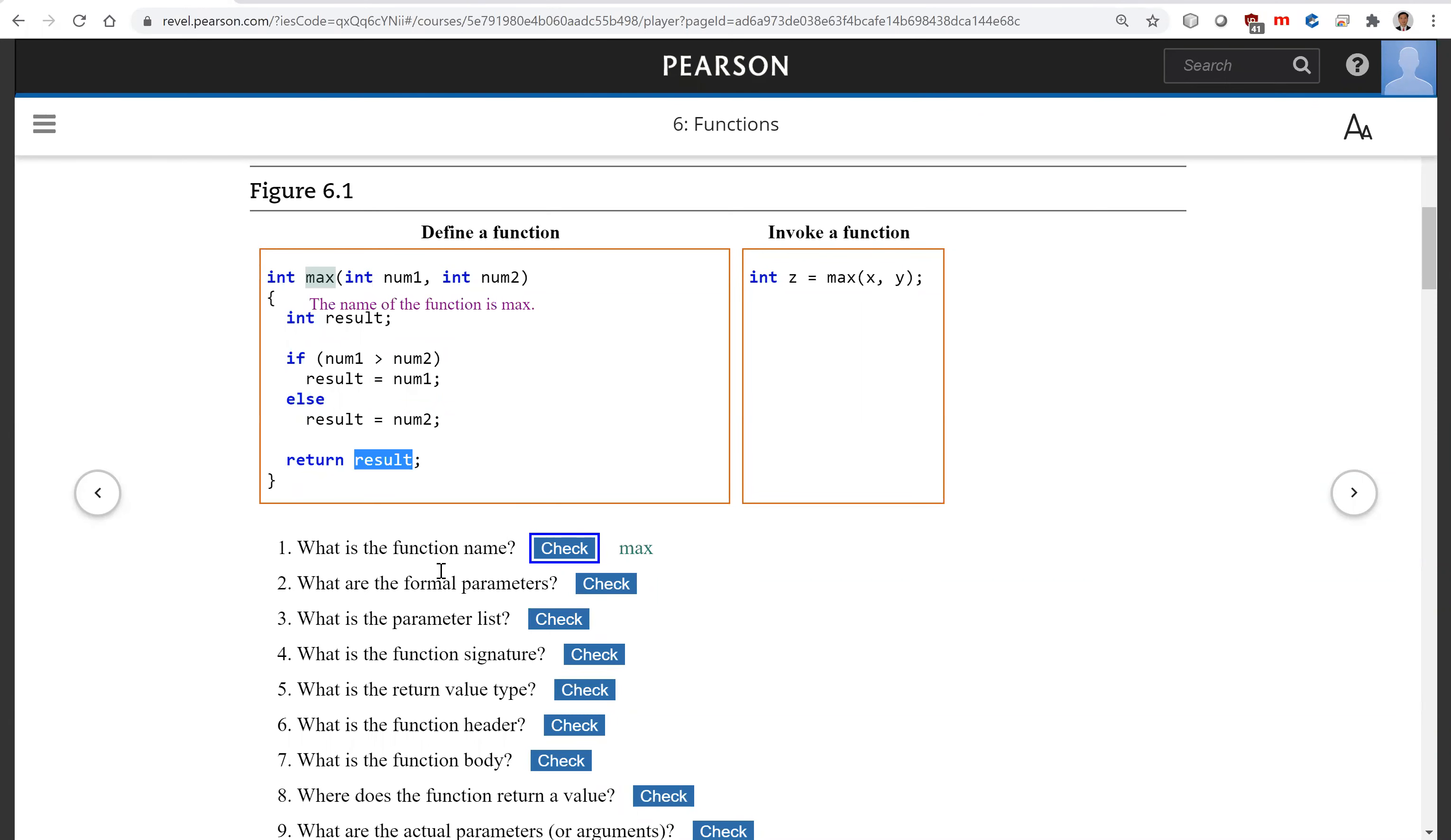Let's look at all these components. So what is the name of the function? Here is this max. The name of the function is an identifier. What are the formal parameters? So these are called the formal parameters. Each has a type. They are separated by commas. And this, the whole thing is called the parameter list.